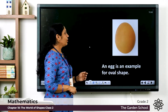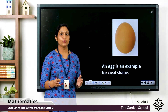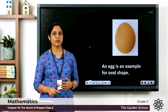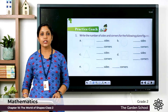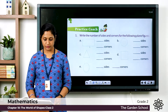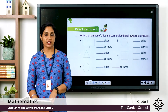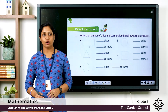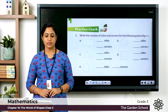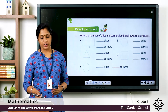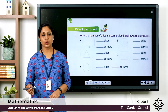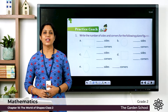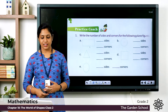Hope you have learned what are plane shapes and how many sides and corners there are for each shape. Now let's move on to our exercise. Open your textbook at page number 142, in the Practice Coach section. The question is to write the number of sides and corners for the following plane figures: rectangle, triangle, oval, square, and circle.